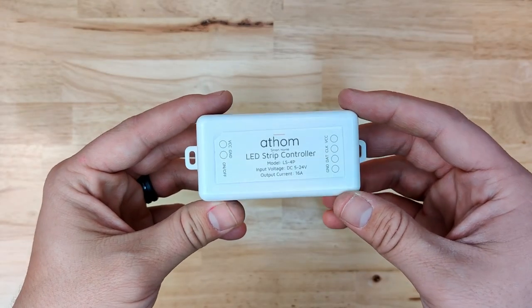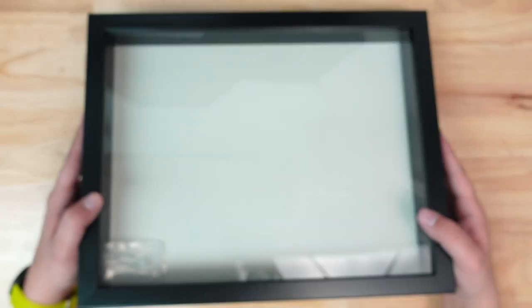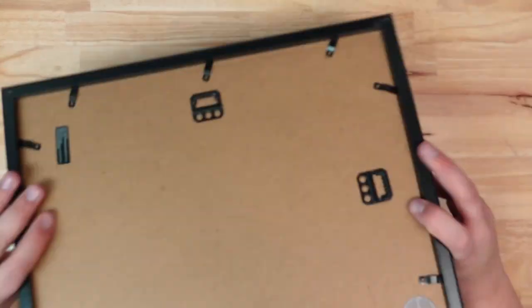So the supplies you're going to need are a WLED controller, a power supply, a WS2812B LED strip, and a shadow box frame. There are a couple other things that I'm going to use along the way but I'm going to link them all in the description so you can check them out there.